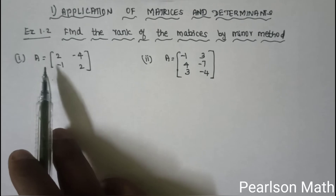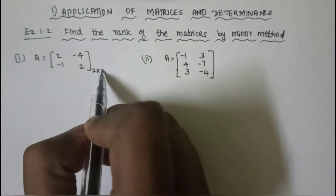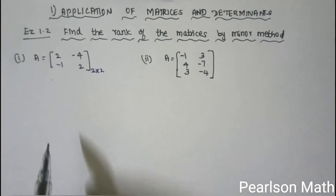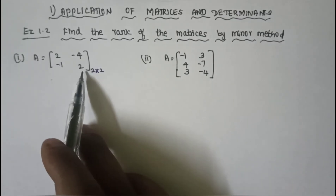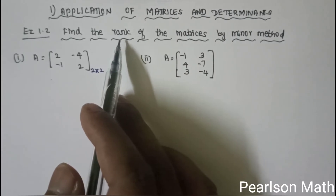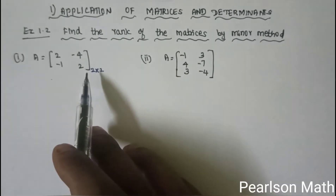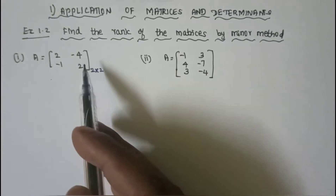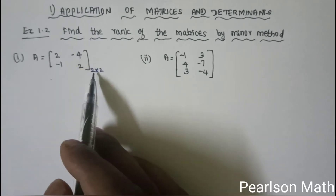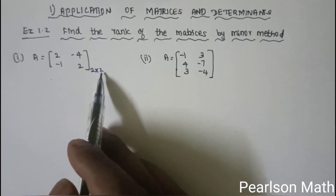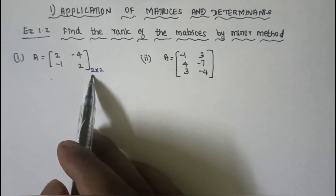First sum: A is equal to [2, -4; -1, 2]. It is a 2×2 matrix. We will find the rank. The rank of a matrix with m rows and n columns will be less than or equal to the minimum of m and n. That is, rank of A ≤ minimum of (m, n). Here, for a 2×2 matrix, rank of A ≤ 2.